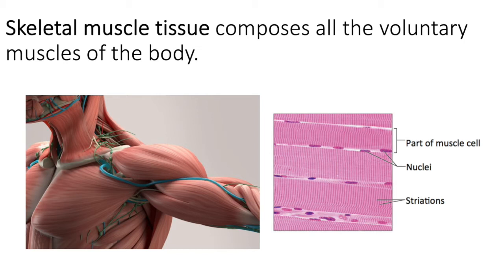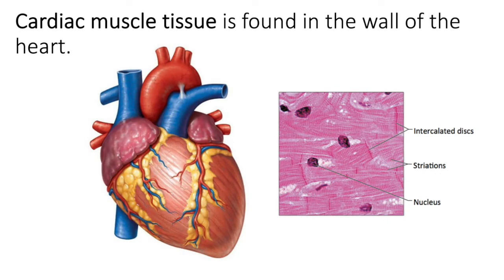Cardiac muscle tissue, as the name implies, is found in the heart. The heart wall has cardiac muscle tissue, and when it contracts it narrows those chambers. There are four chambers in the heart. When those chambers contract, the blood inside moves from the right atrium to the right ventricle, then is propelled out to the lungs. Returning blood enters the left atrium, and when the heart contracts it pushes that blood into the left ventricle, which then pushes it out through the aorta.